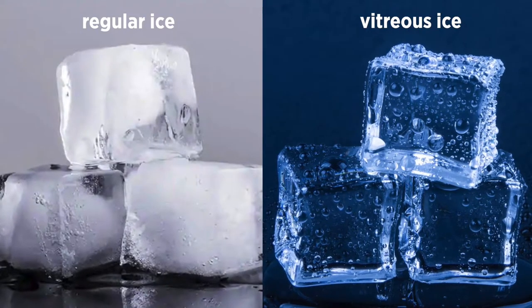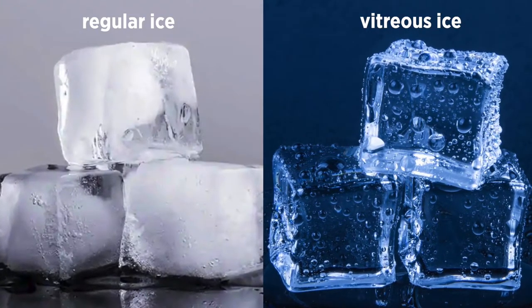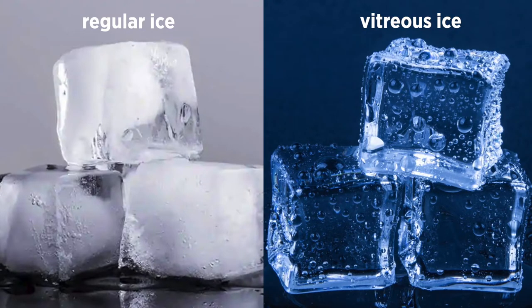Vitreous means glassy, and so what we're doing is we're trying to freeze samples so fast that they just form a glassy ice. It means that it doesn't have any crystalline structure to it.